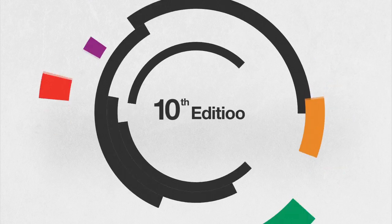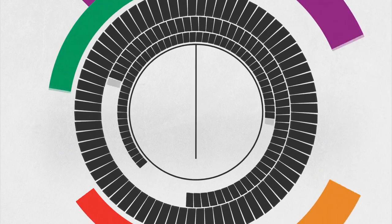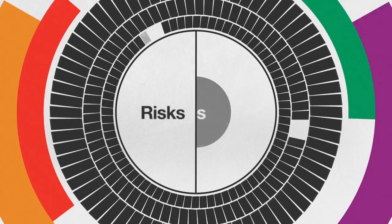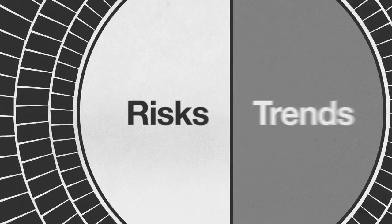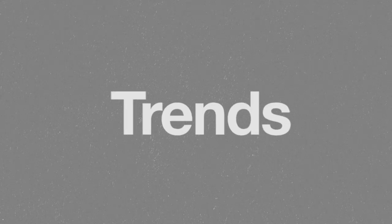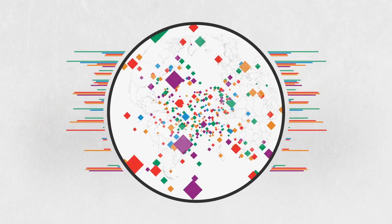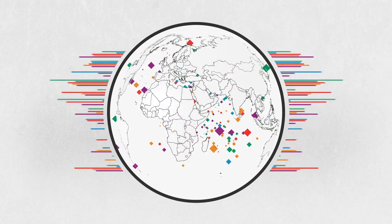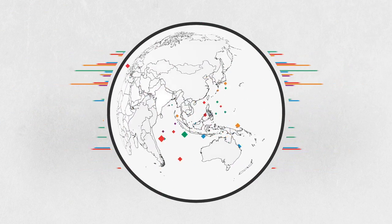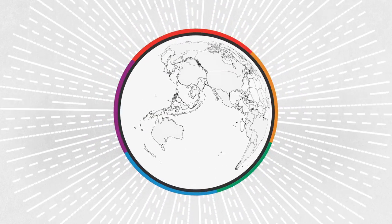In its 10th edition, the Global Risks Report now makes a critical distinction between risks and trends. Risks are uncertain predictions. Trends are the current patterns that will either amplify or prevent them. Through their interplay, we can create a blueprint for action. Join the conversation to help address global challenges.